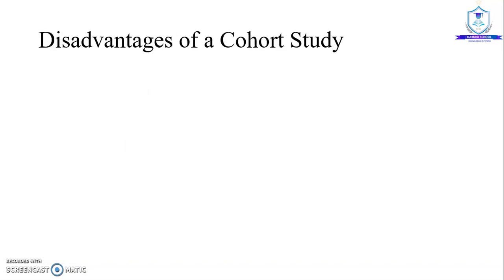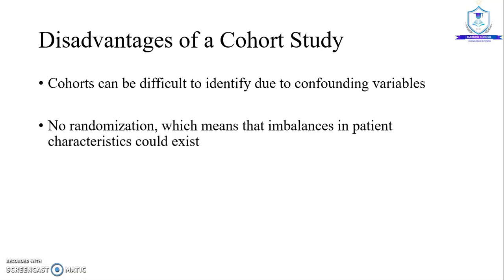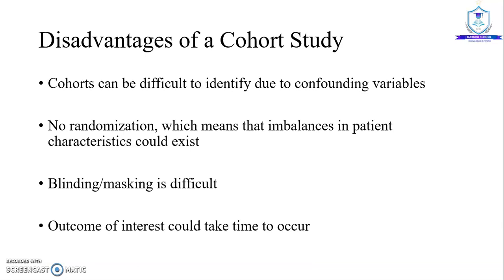There are some disadvantages of a cohort study. Cohorts can be difficult to identify due to confounding variables. No randomization, which means that imbalances in patient characteristics could exist. Blinding or masking is very difficult for cohort studies. Outcome of interest could take time to occur.